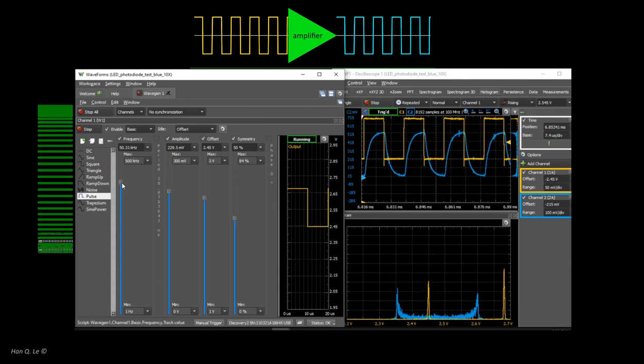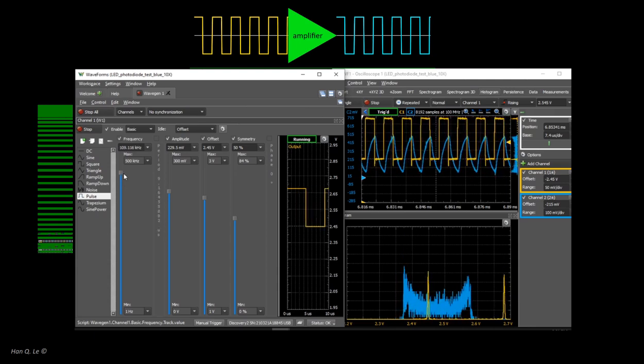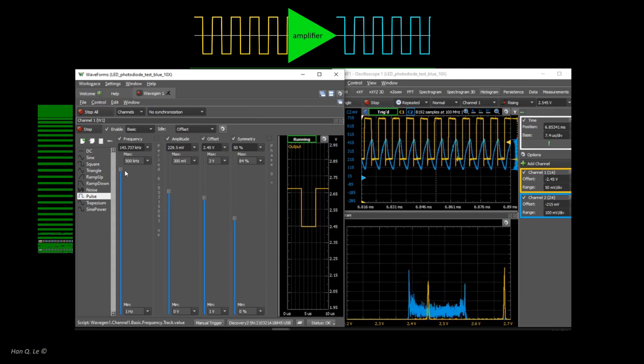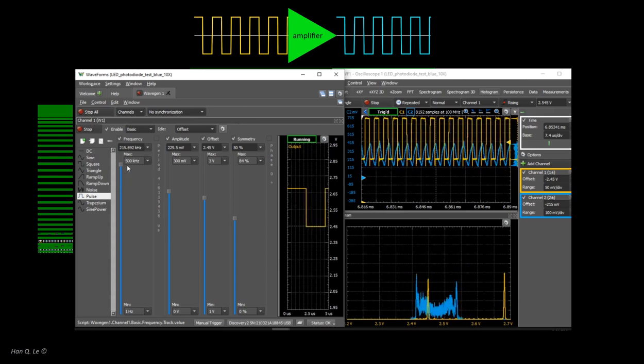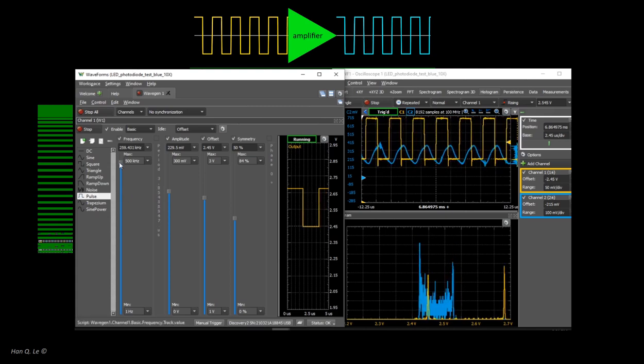This phenomenon is called roll-off, and at the frequency where the output amplitude is only one half of itself at low frequency, it is called 3 dB bandwidth. Minus 3 dB on the log scale is about one half. Hence, 3 dB bandwidth means the frequency limit where its gain is only one half of the designed value.